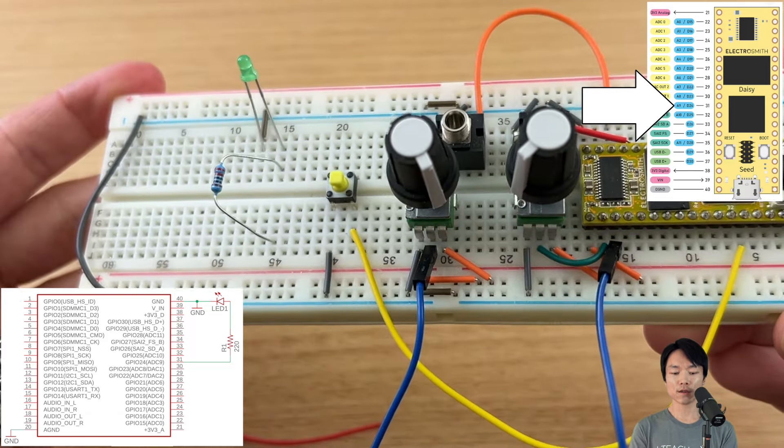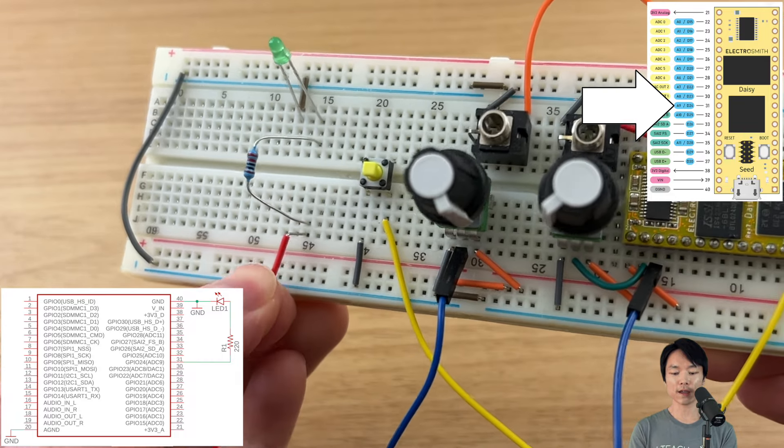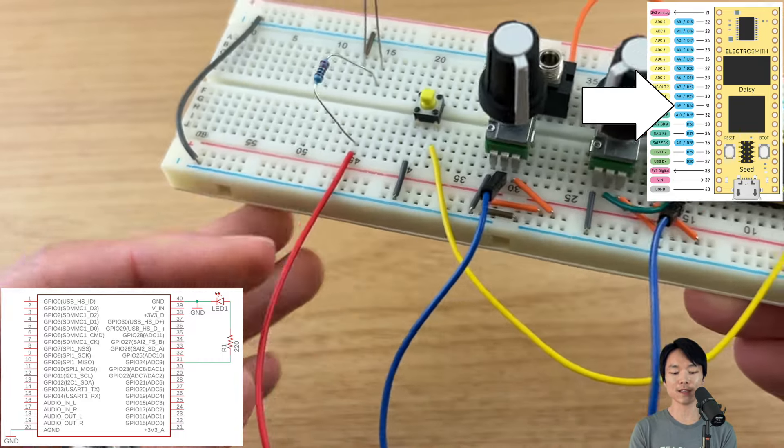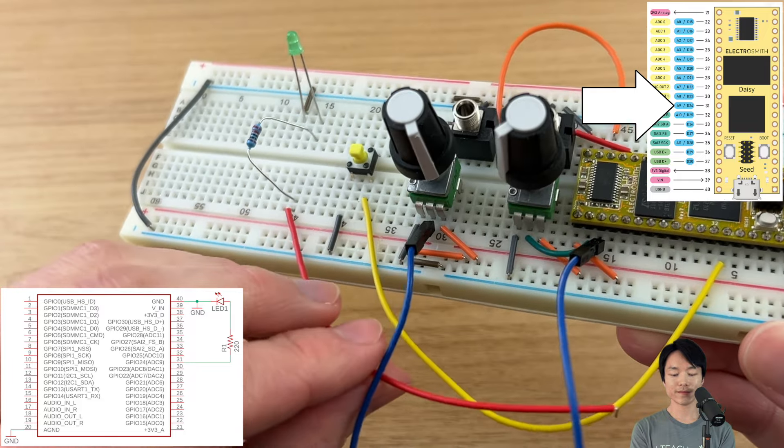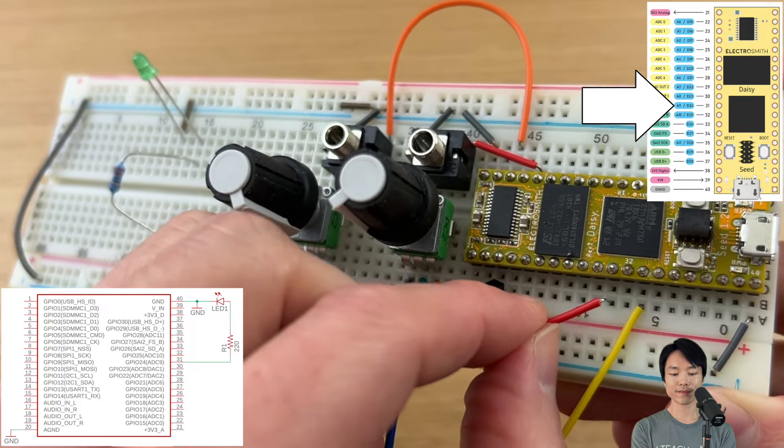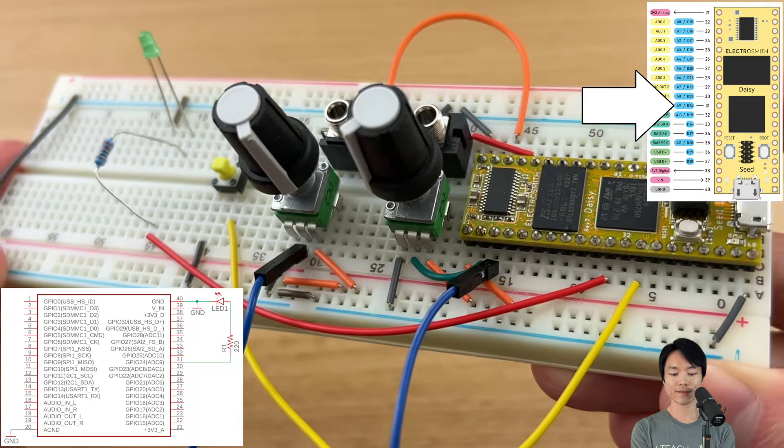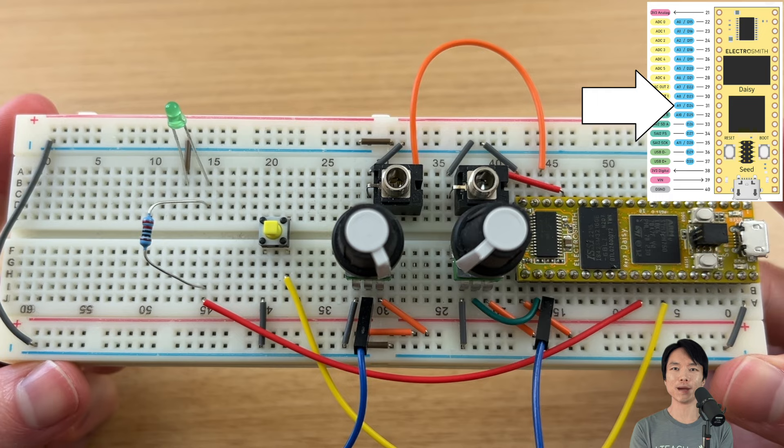So instead of connecting the longer leg to the positive power rail, let's grab a jumper wire and connect to pin D24 instead. And that's it! Let's start programming.